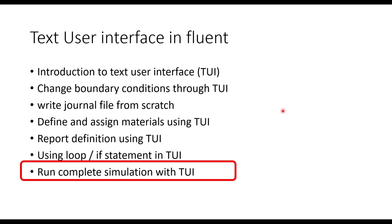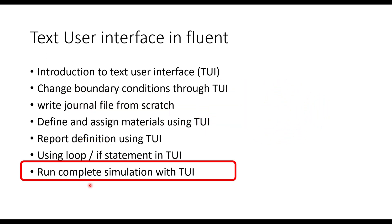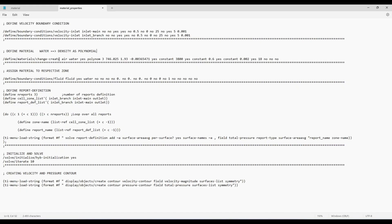Hello everyone, welcome back to my YouTube channel. Let's continue with our series on text user interface. In previous videos I have discussed all these points. In today's video we are going to run a complete simulation, which will start from defining boundary conditions, defining material, assigning material to the respective zone, then there will be a journal file using a loop statement. Let's go through this file one by one.